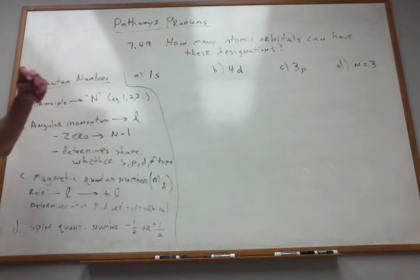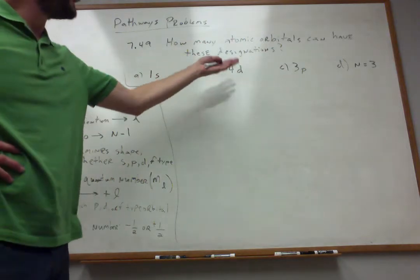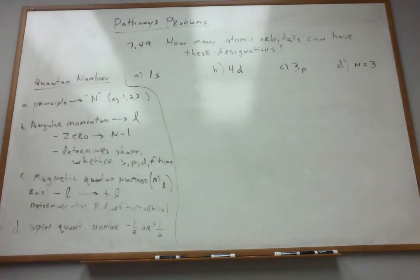So 1s is very close to the nucleus, whereas 4d is much further away from the nucleus.